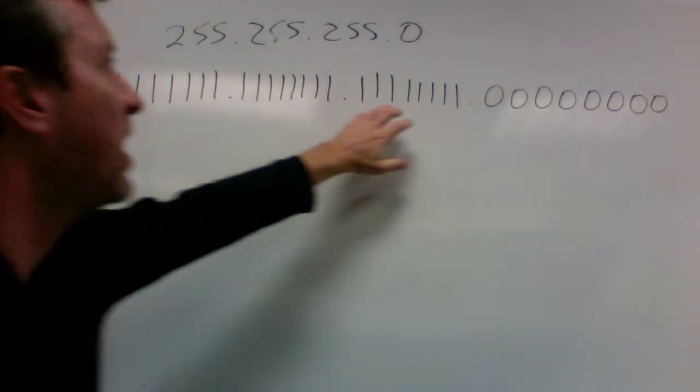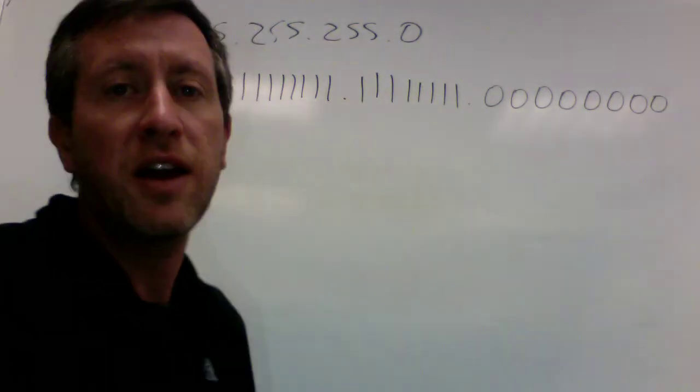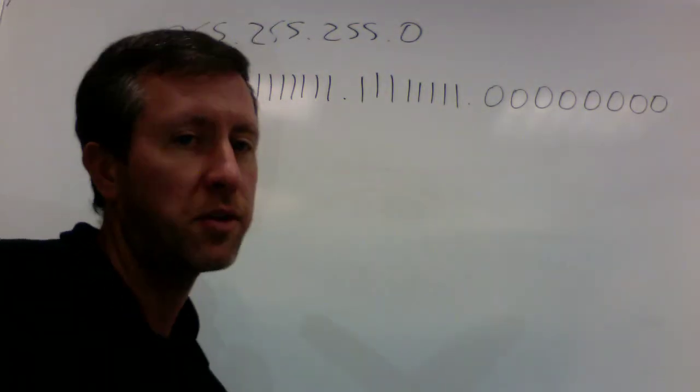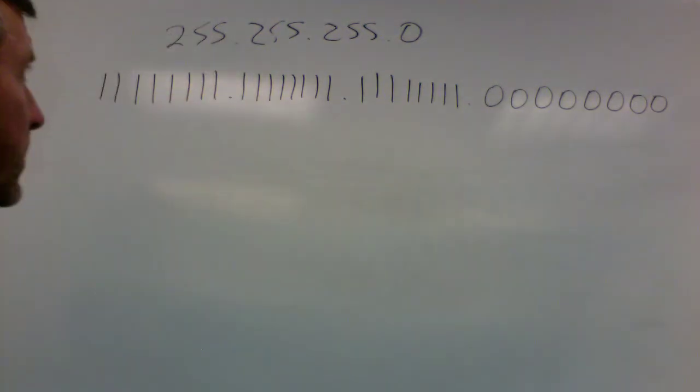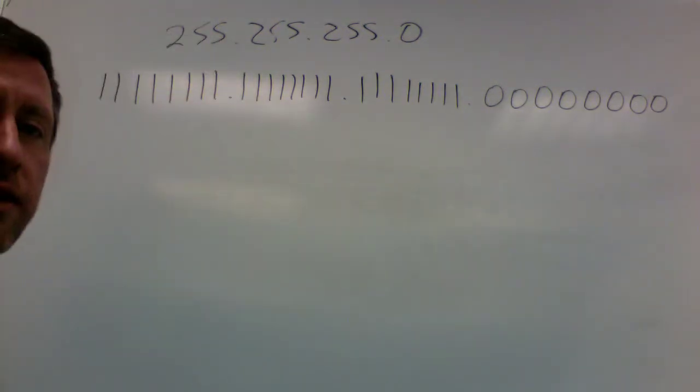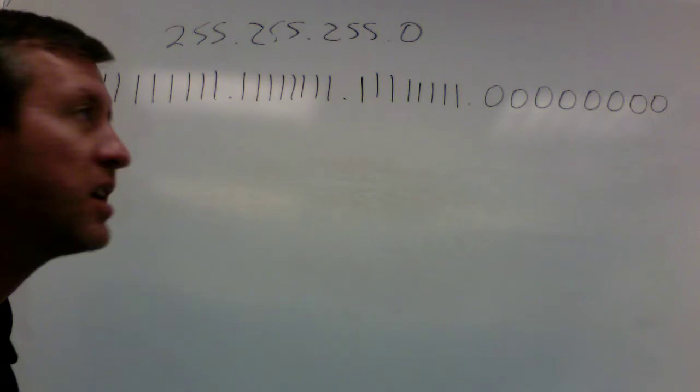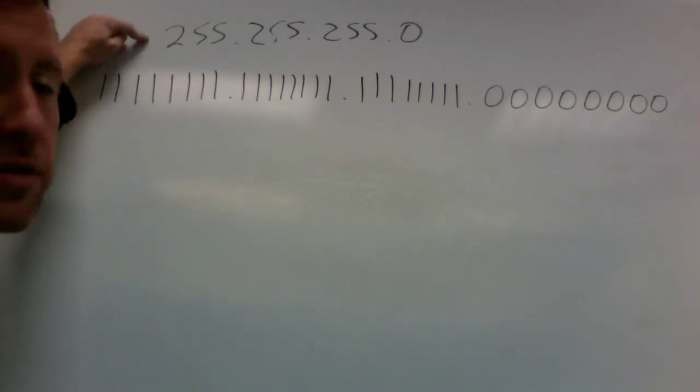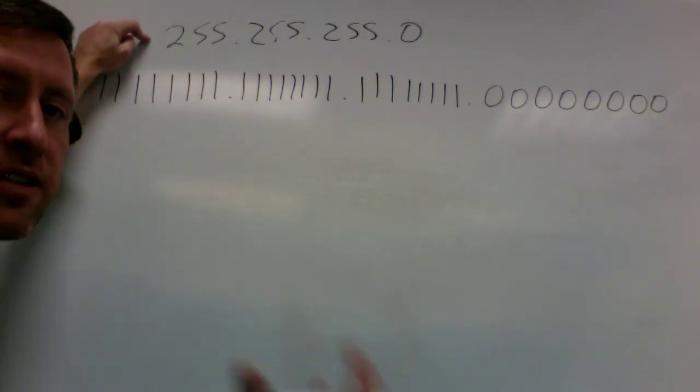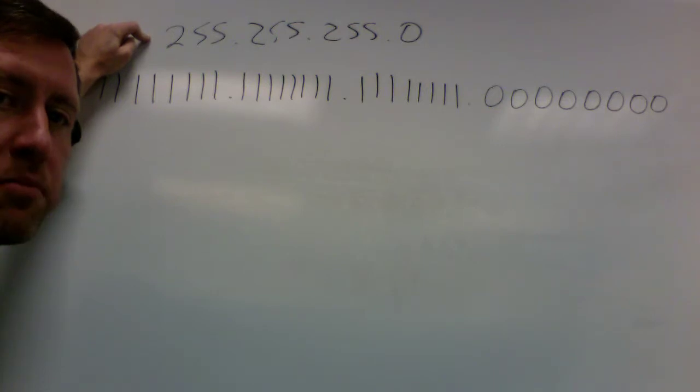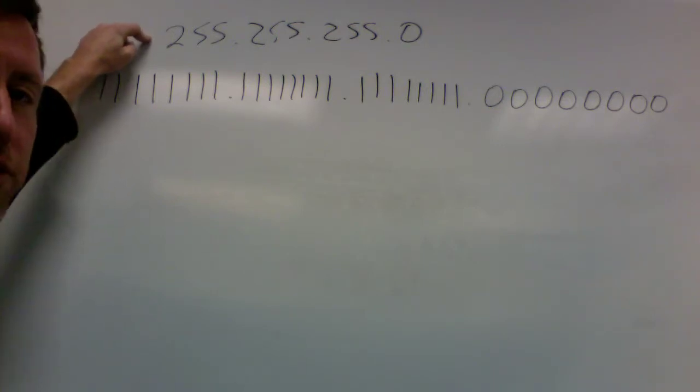And this is why we actually say that IPv4 is actually a 32-bit IP address because we take the eight bits here, eight bits here, eight bits here, and eight bits here. I know that eight times four is 32. So this is our 32-bit subnet mask in binary, and this is our 32-bit subnet mask in the decimal notation of the base 10 mathematical system that pretty much we're all used to.